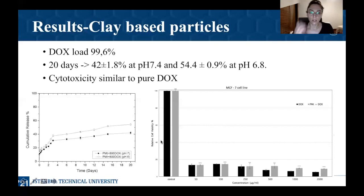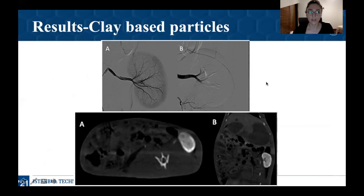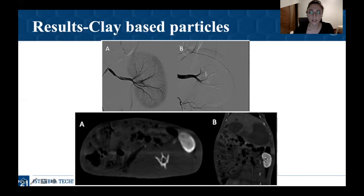When we tested the clay particles in vitro, again in human breast cancer cell lines, we saw that at all concentrations our particles performed similarly to pure doxorubicin. Finally, we tested the clay mineral particles in vivo. Here again, we can see that the blood supply to the kidney was blocked. Since we had contrast media loaded onto the clay mineral particles, we can see the particles inside the kidney in the computed tomography imaging.